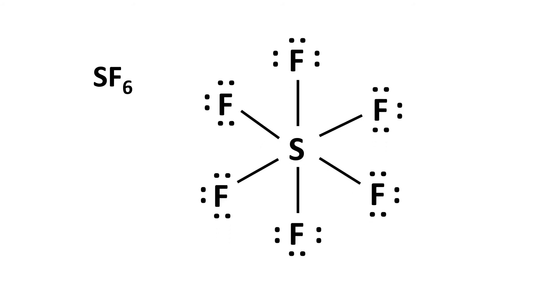The next example is SF6. In this case, Sulfur is the central atom, and Sulfur has more than 8 electrons — it has 12 valence electrons in the central atom. So both compounds have central atoms with more than 8 electrons; they are both expanded octet, both located in period 3 and onwards, and both are stable.